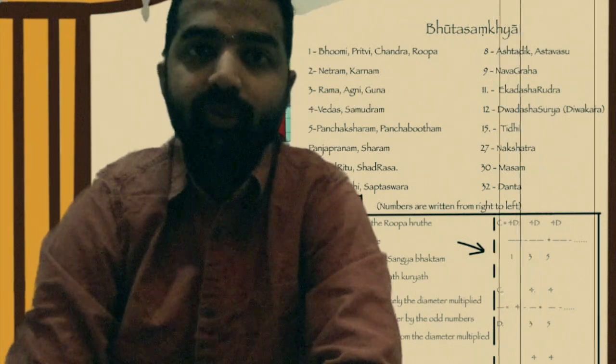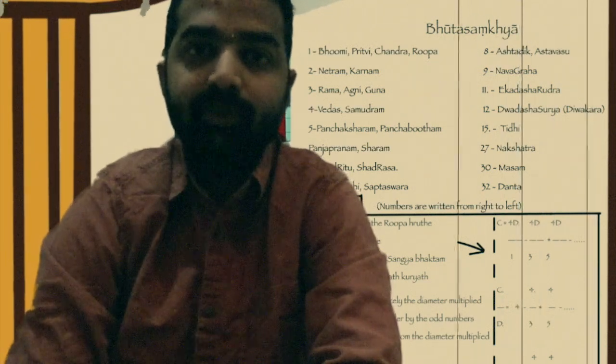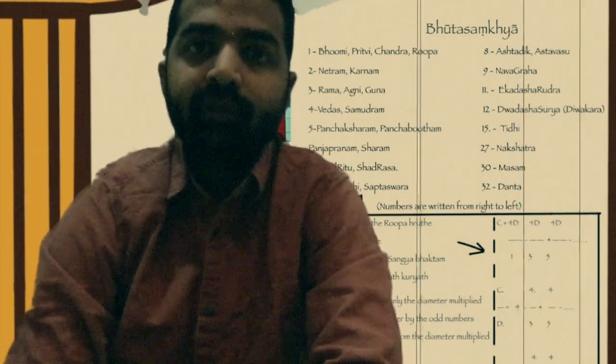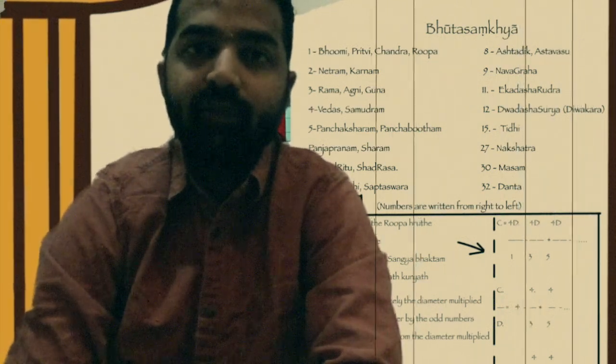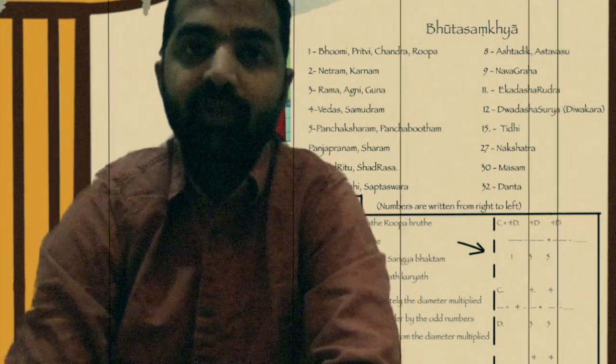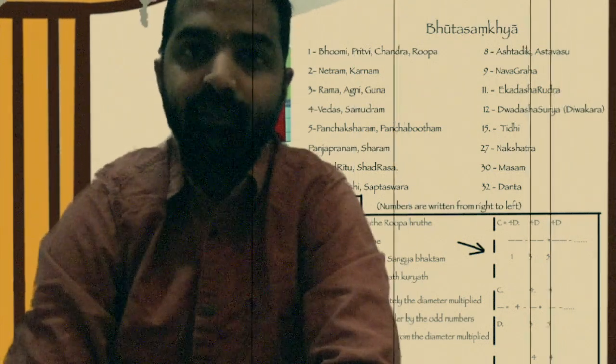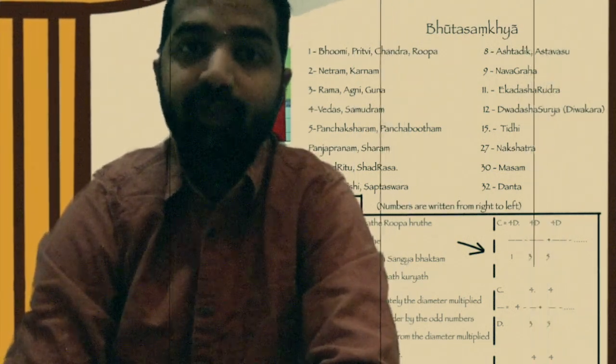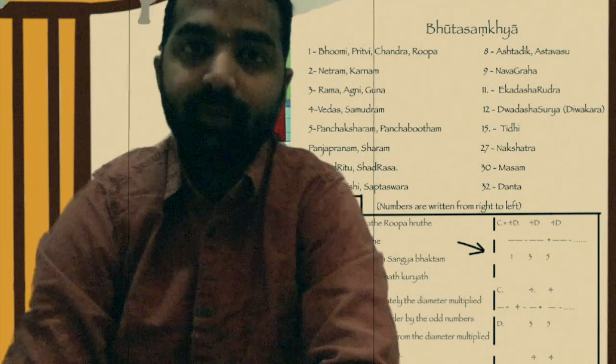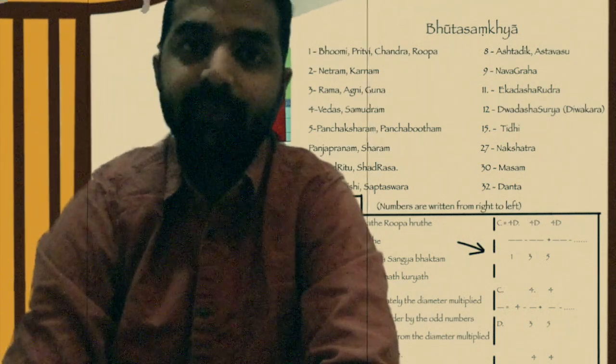Shadrithu — Rithu represents number 6. We know in a year we have got 6 Rithus: Hemantarithu, Varusharithu, etc. So, Rithu represents number 6. Rasa also represents number 6.